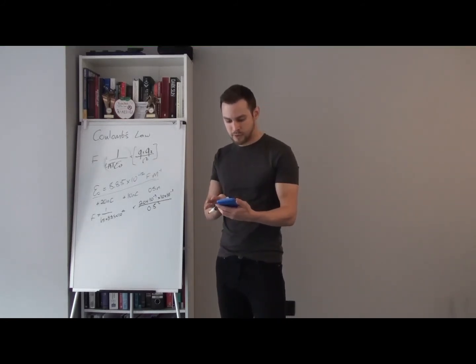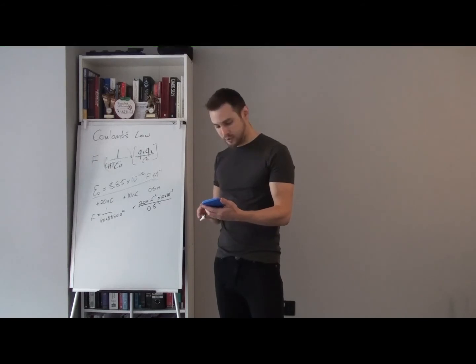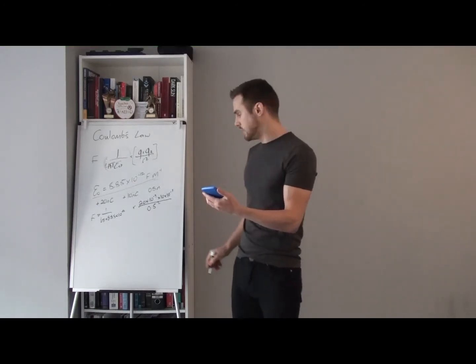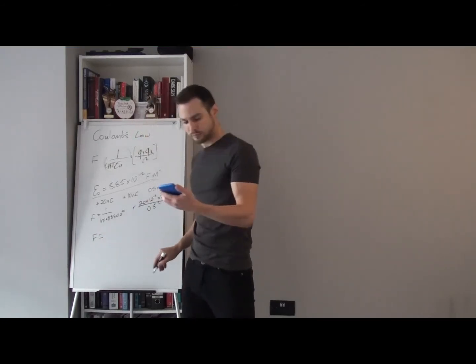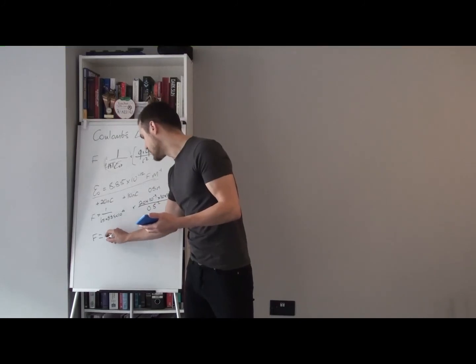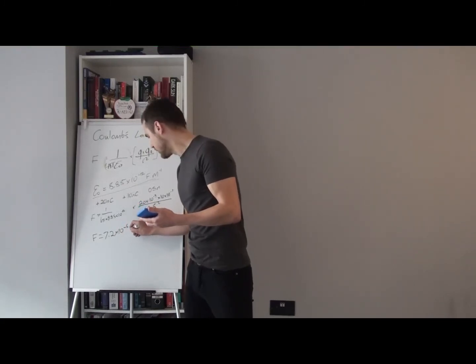So let's type in our numbers. On fraction, we need 1 over 4, shift pi, times 8.85 times 10 to the power of minus 12. And we're going to times this fraction by another fraction. We have 20 times 10 to the power of minus 9, and then times that by 10 times 10 to the power of minus 9. And that is all over 0.5 squared. And we have here that the force between these two particles, F is going to be 7.19. So we'll call it 7.2 times 10 to the minus 6 newtons.